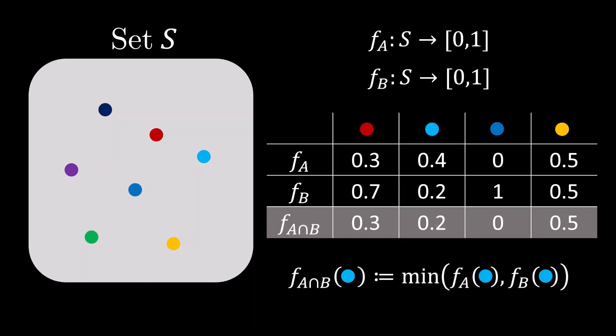Similarly, the membership function describing the intersection is obtained by taking the minimum of the individual membership functions.